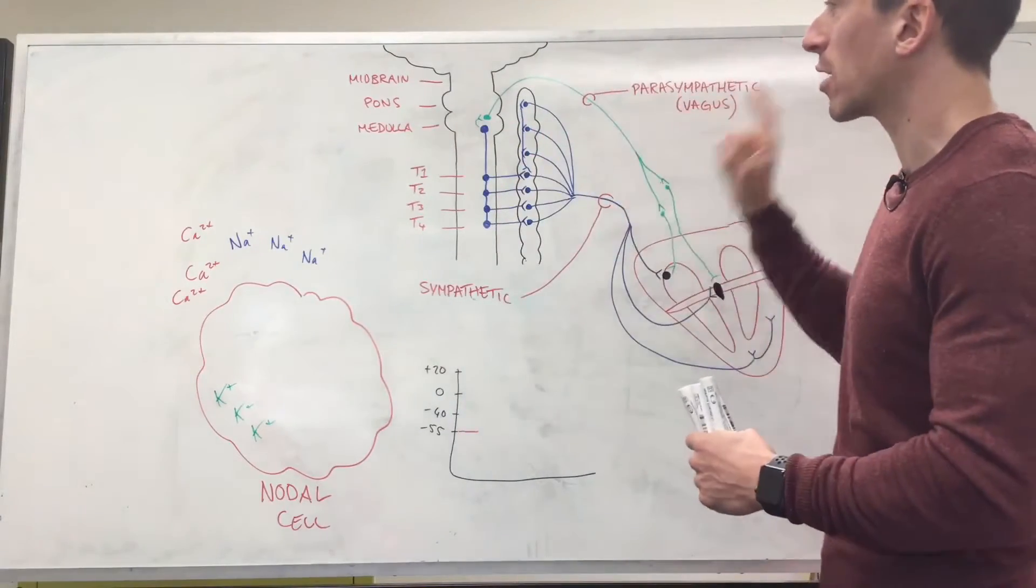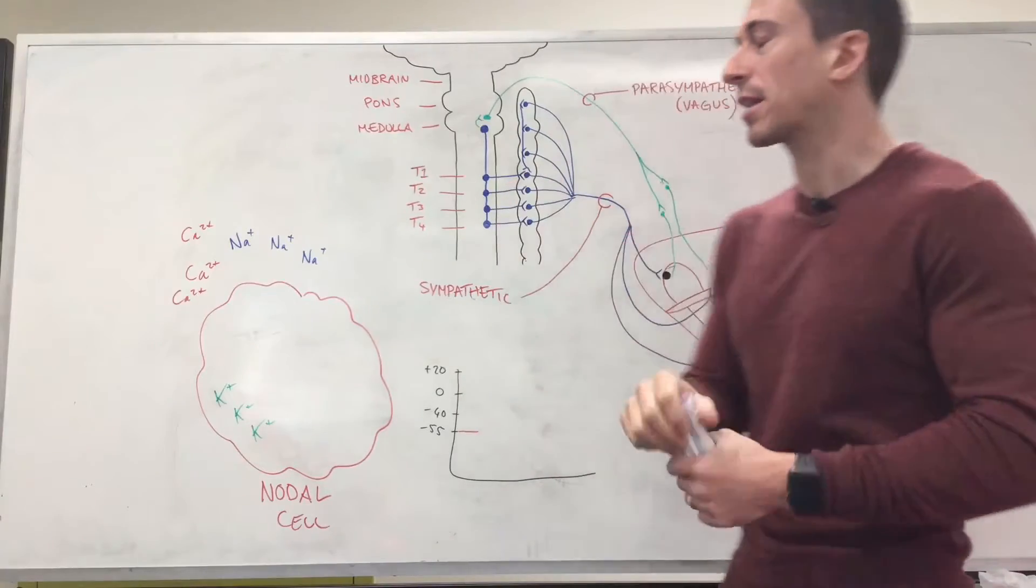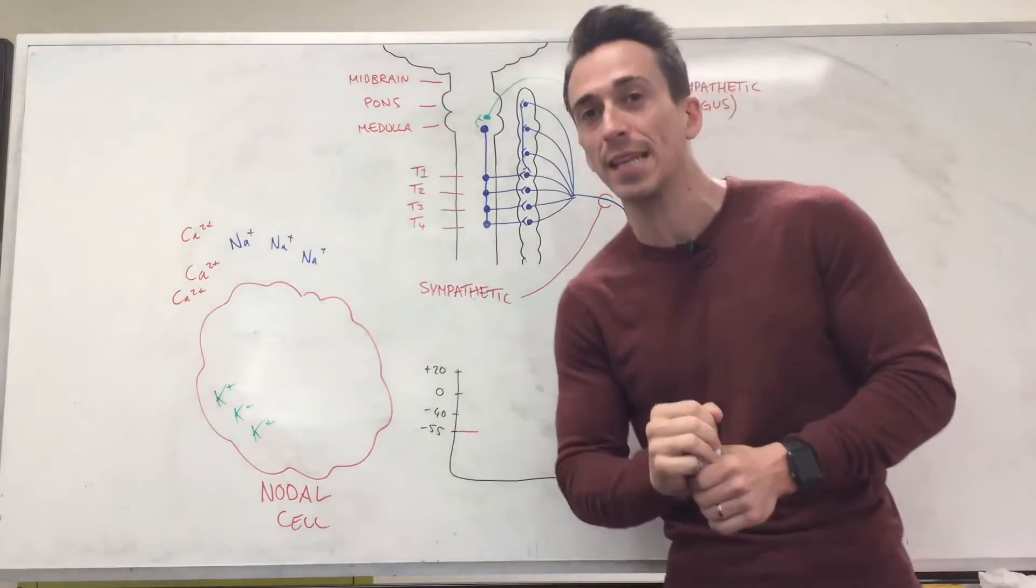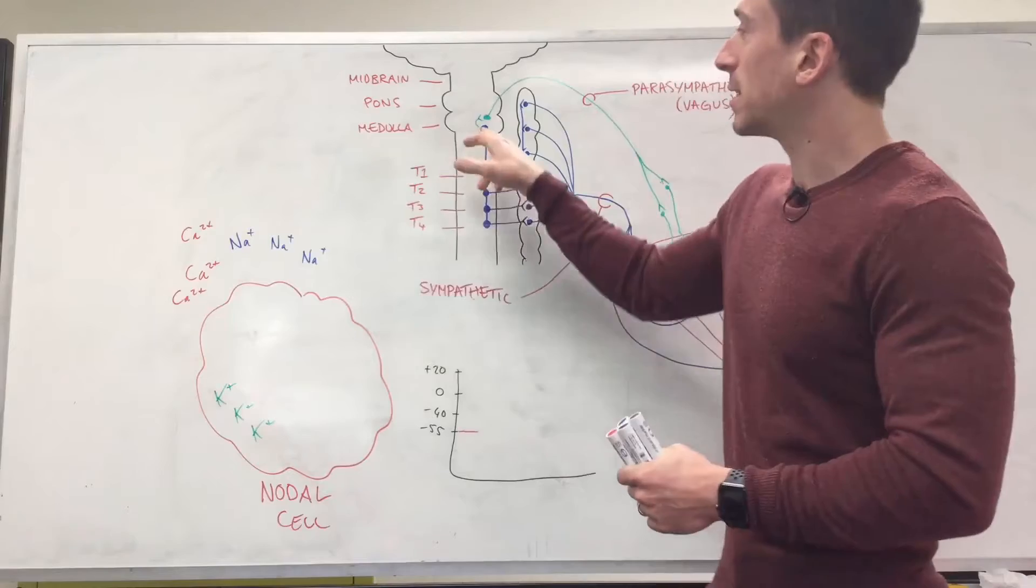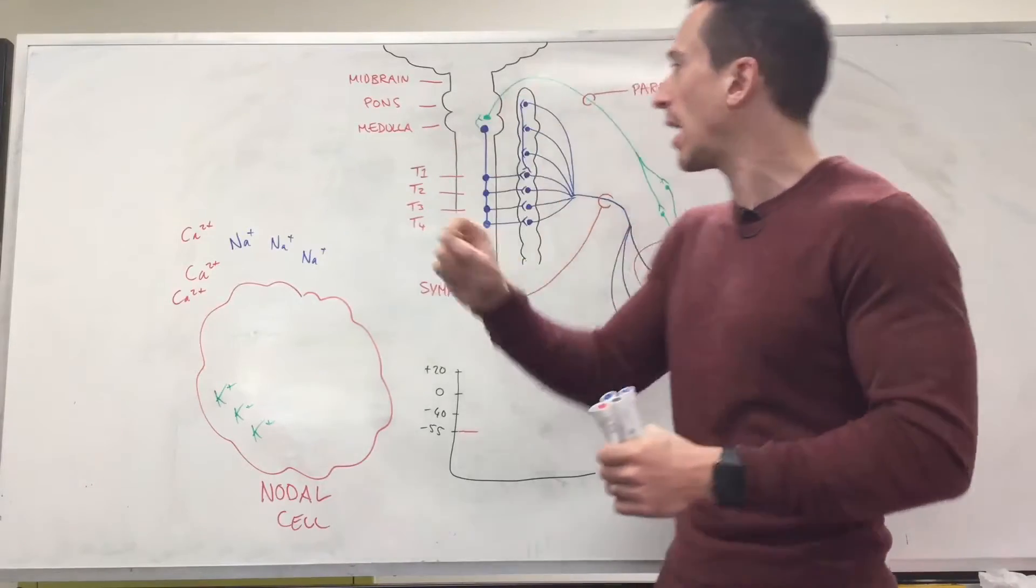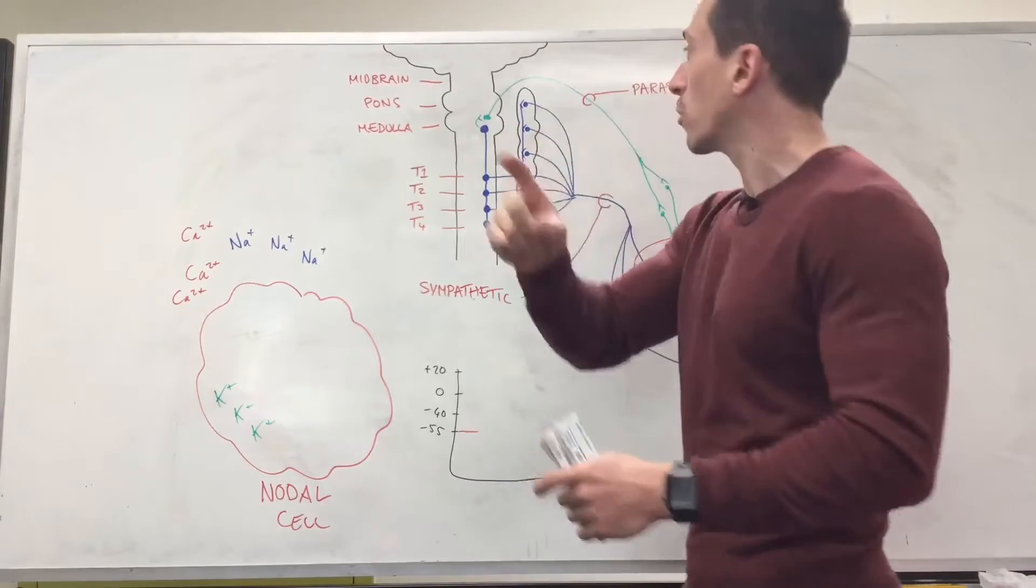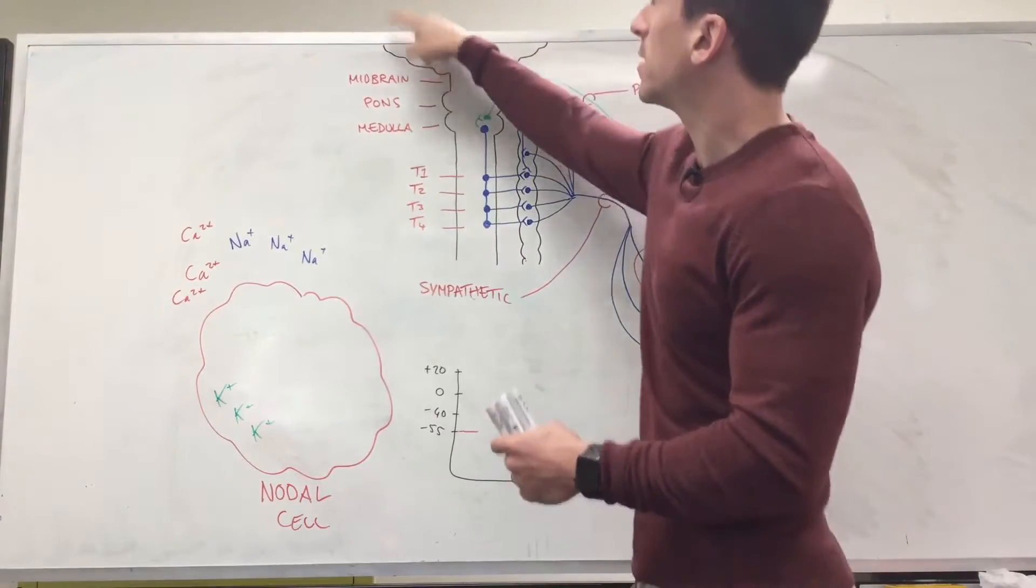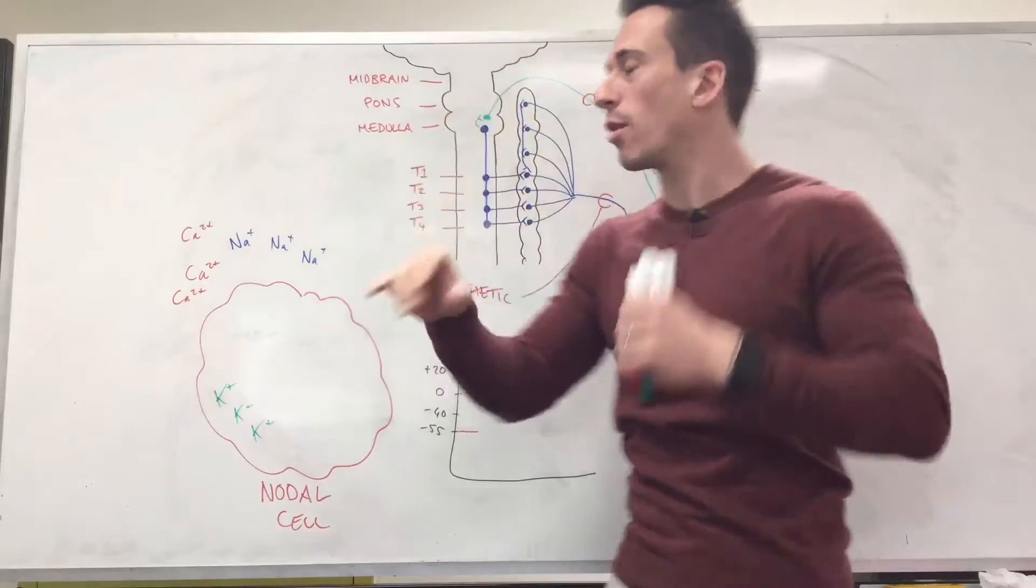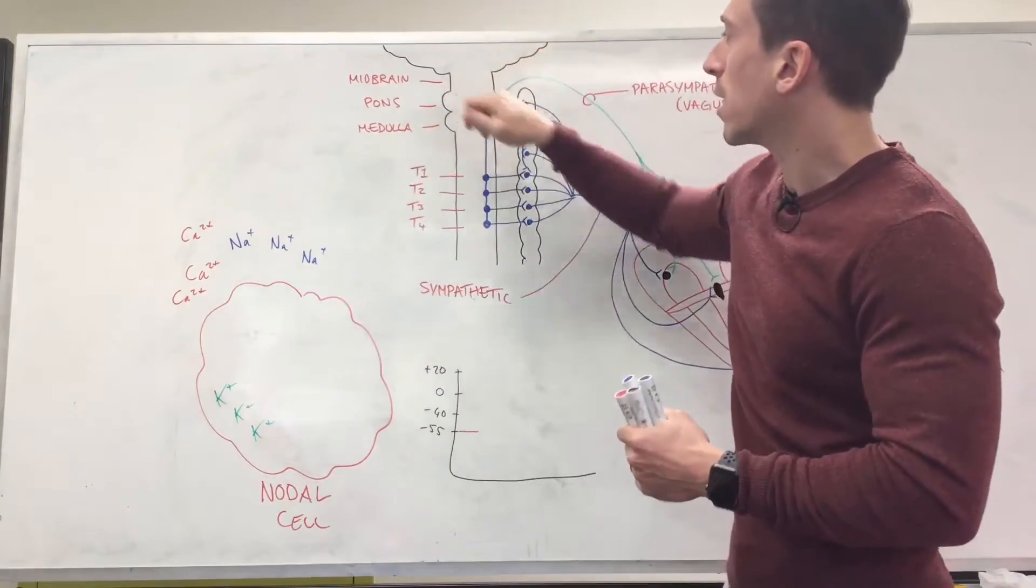Sympathetic innervation is going to begin for the heart at the cardio acceleratory center—it's a big name, but this is the part that controls the speed of the heart. It is here at the medulla. So remember your brainstem has the midbrain, pons, medulla and this is the cerebrum, the chunk of the brain. So midbrain, pons, medulla.